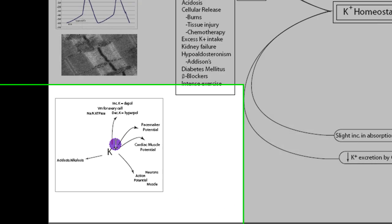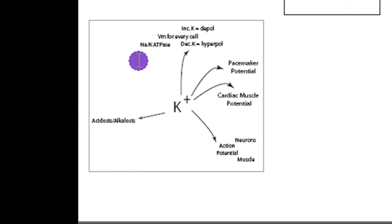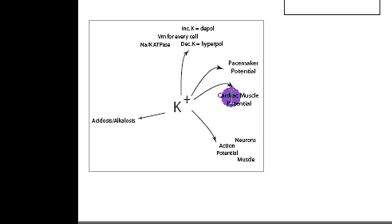Potassium is important because it plays a role in the sodium-potassium ATPase: three sodiums are pumped outside of a cell and two potassiums are pumped into the cell. That sets the voltage of the membrane. If we have increased K, we're going to depolarize; if we have decreased K, we're going to hyperpolarize. That membrane voltage affects the pacemaker potential of the heart — how fast the heart beats — cardiac muscle contractility, neuron action potentials, and muscle action potentials.